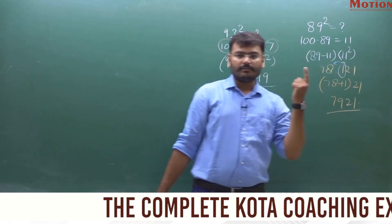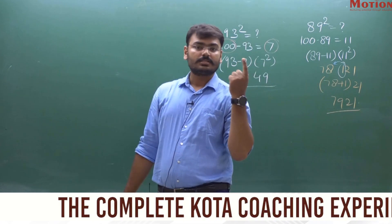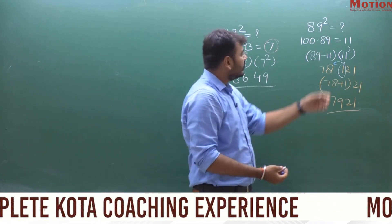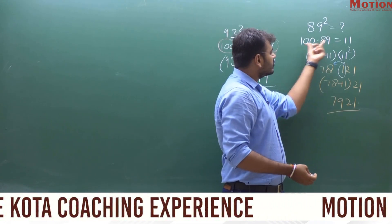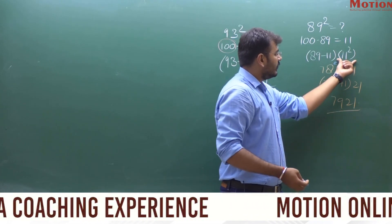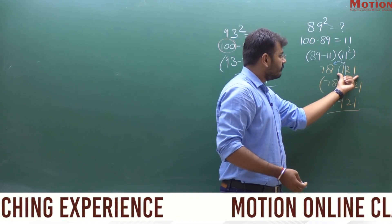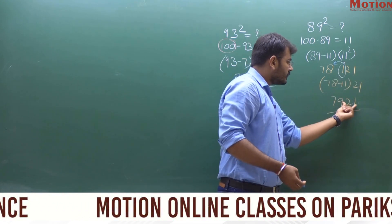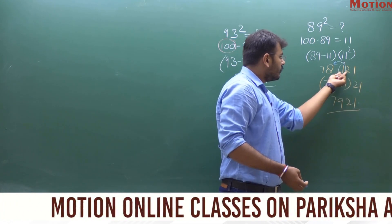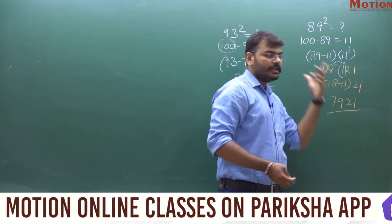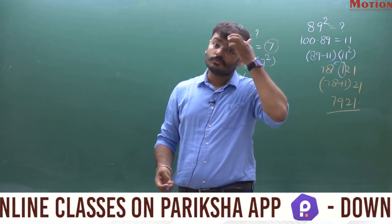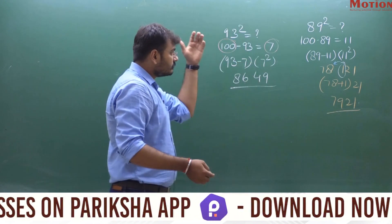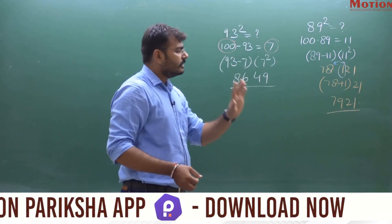So it will be 21 and 78 plus 1 equals 79. Therefore 7921 is the square of 89. To recap: 89 is 11 less than 100, so 11 squared is 121. We carry the 1, place 21 at the end, and add 1 to 78 to get 79. So 7921 is the square of 89.